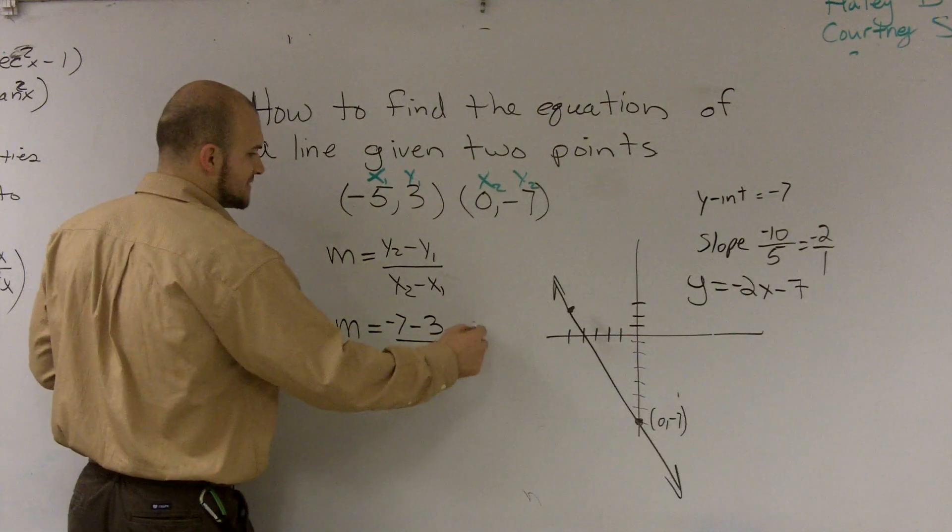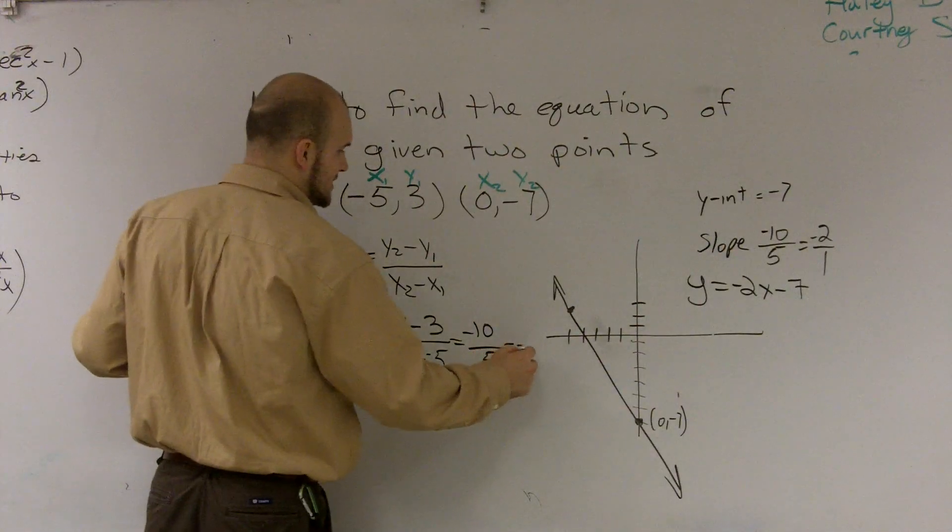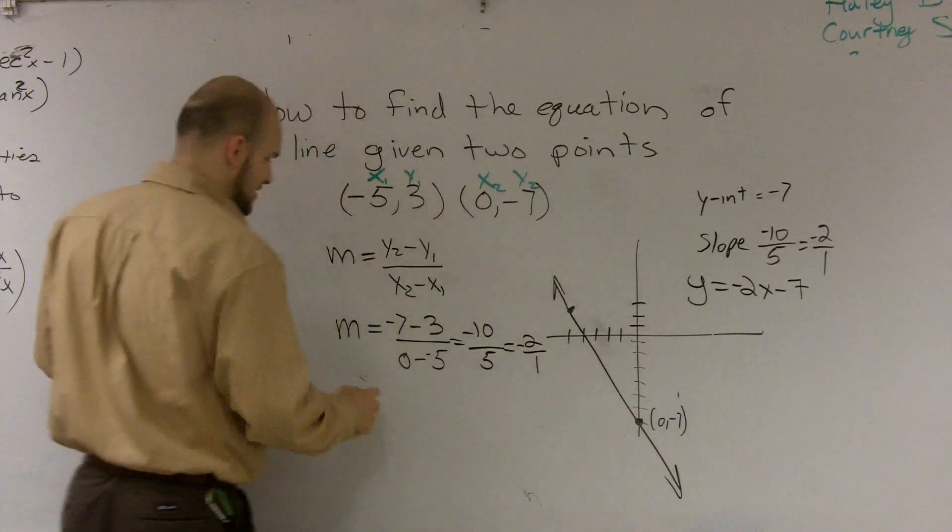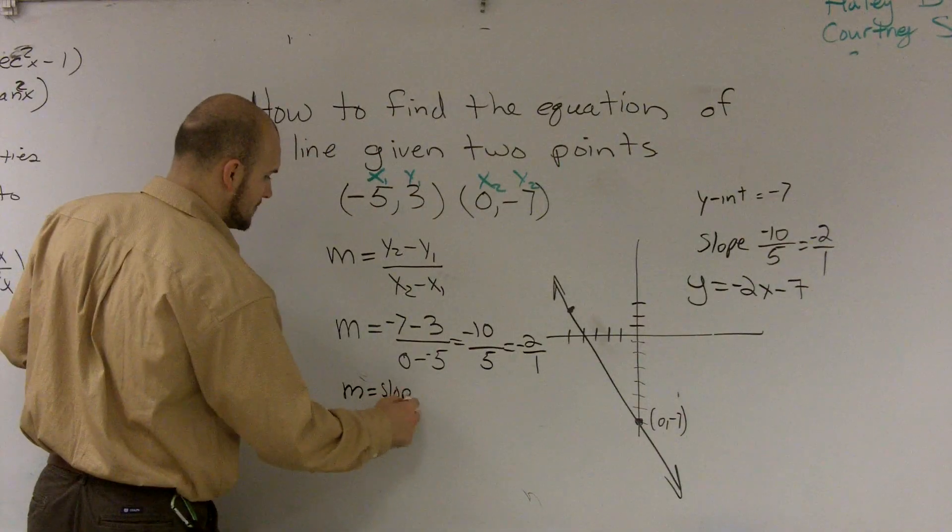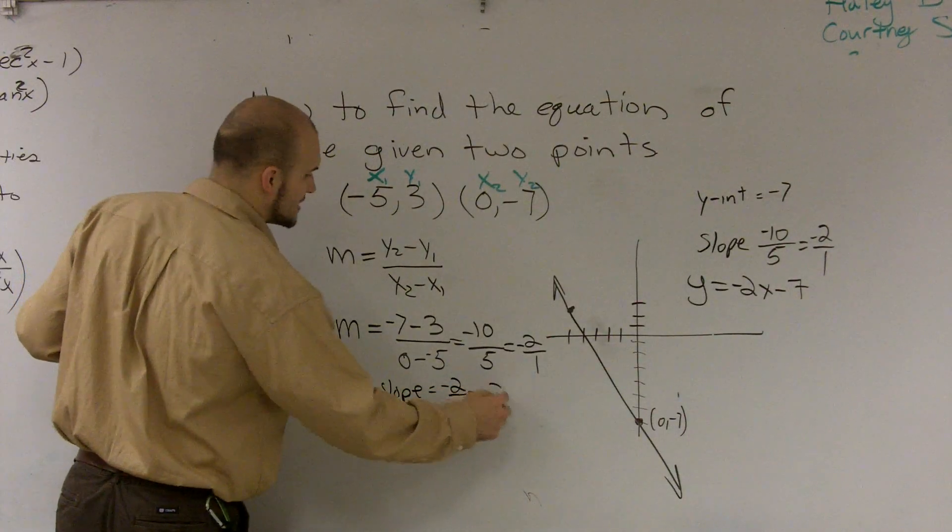Negative 7 minus 3 is negative 10 over positive 5, which equals negative 2 over 1. So therefore, my m, which is equal to my slope, is equal to negative 2 over 1, which is equal to negative 2.